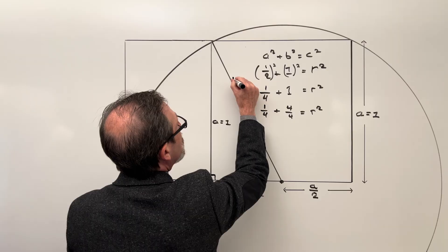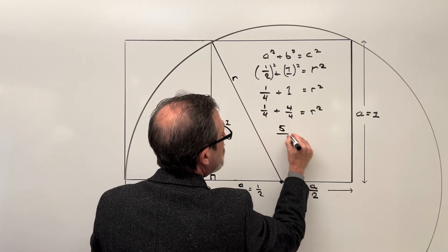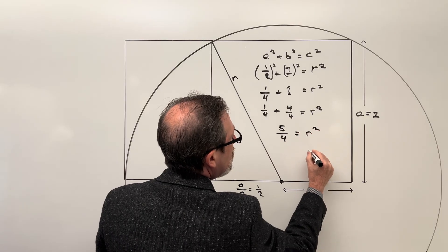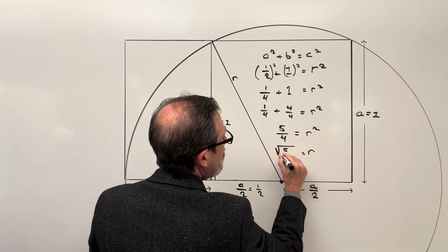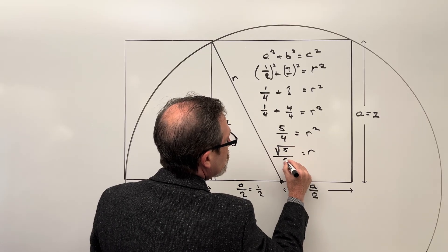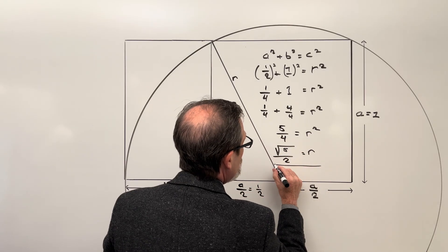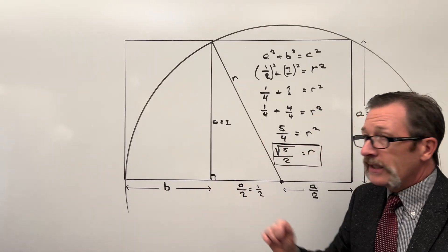I'll call this our radius R. So now I've got 5 fourths equals my R squared and therefore R must be the square root of 5 all over the square root of 4 which is just going to be 2. Now that we have that, let's see if they can get side B.